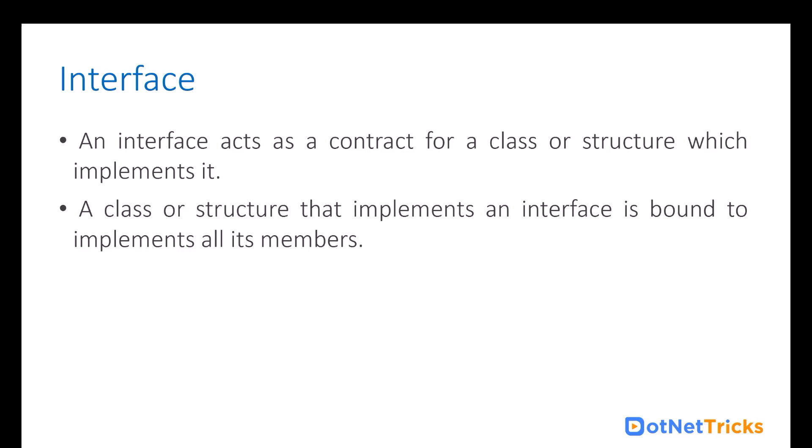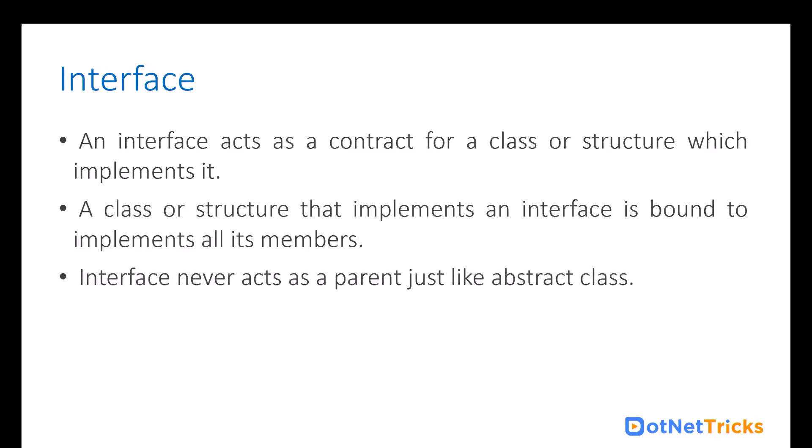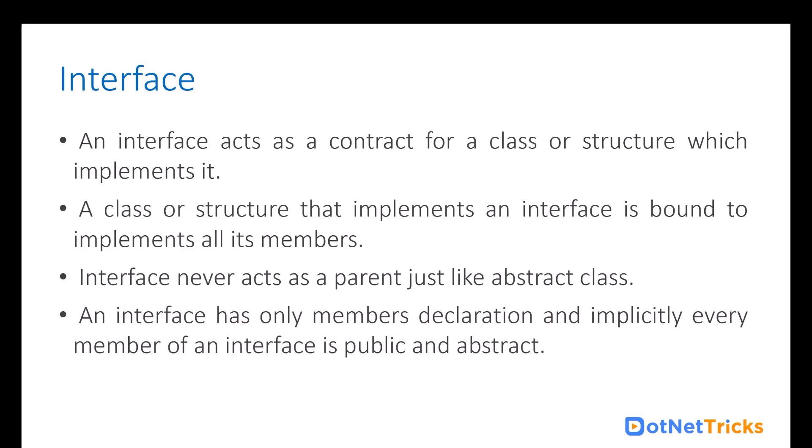Whatever the contract the two parties signed, they have to follow. If there is a change in the contract, there is always a dispute between the two parties. Similarly here, when you change the interface members — like interface methods — the implementing class or structure will start showing errors. When you add a new method that you have not implemented in the implementation class, you will start getting errors. That is the same thing as when two parties have a dispute due to a change in contract. Interface never acts as a parent class. The interface has only member declarations, and implicitly every member of an interface is public and abstract, so you don't need to explicitly define them as public and abstract. It cannot have non-abstract members.